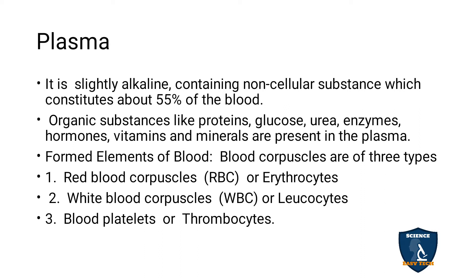The formed elements of the blood — that is blood cells or blood corpuscles — are of two types: red blood corpuscles (RBC or erythrocytes), white blood corpuscles (WBC or leukocytes), and blood platelets or thrombocytes.